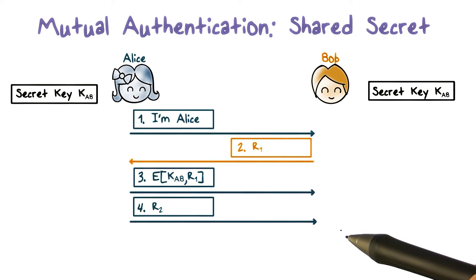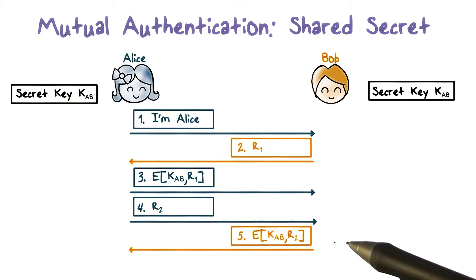Fourth, now it is Alice's turn to authenticate Bob. So, similarly, she sends Bob a random challenge R2. Fifth, Bob encrypts R2 with the shared key KAB and sends the ciphertext to Alice.